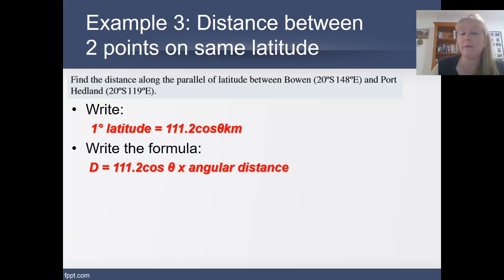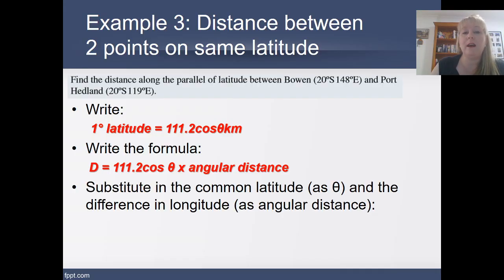I write my formula down. That was given to me on my formula sheet. And now I've got to work out the difference in the longitudes between Port Hedlund and Bowen, which is going to be 148 take away 119. Now the common latitude they have is that angle theta. So that's the 20 degrees there.